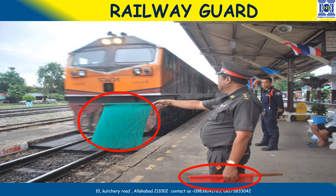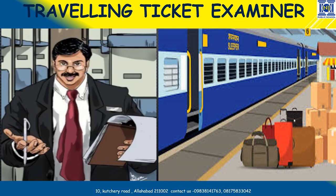Then children, there are also railway guards who show flags to engine drivers to move the train or to stop the train. Can you see over here? The guard is showing the green flag, that means the train has to move. And if the guard shows red flag, then the train has to stop. Also, there is the travelling ticket examiner in the train. The ticket examiner checks whether we are carrying a valid ticket to travel in the train and whether we are seated in the right seat.